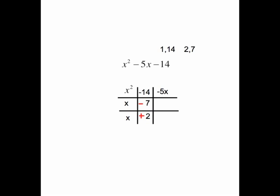Let's check. x times negative 7 is negative 7x. x times 2 is 2x. Add these together. Negative 7x plus 2x gives me negative 5x. So this is set up perfectly. Group on the diagonal. x plus 2 times x minus 7. So there's the appropriate factoring there.